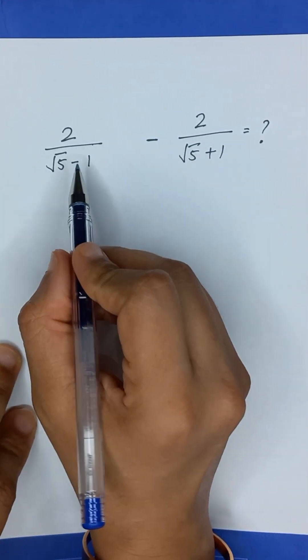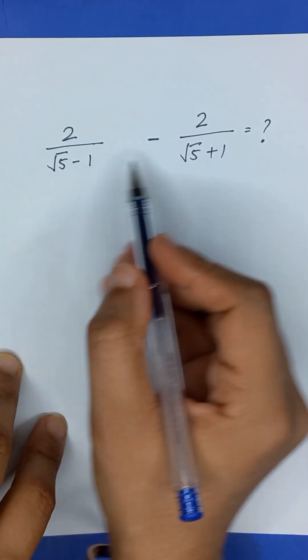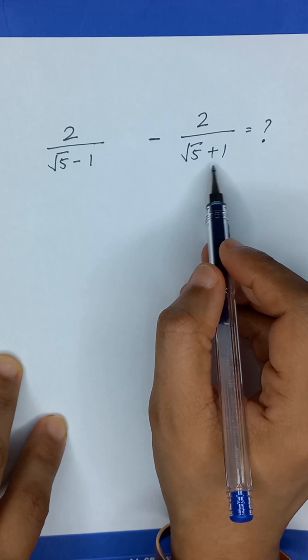What will be the value of this given expression: 2 divided by square root of 5 minus 1, minus 2 divided by square root of 5 plus 1?